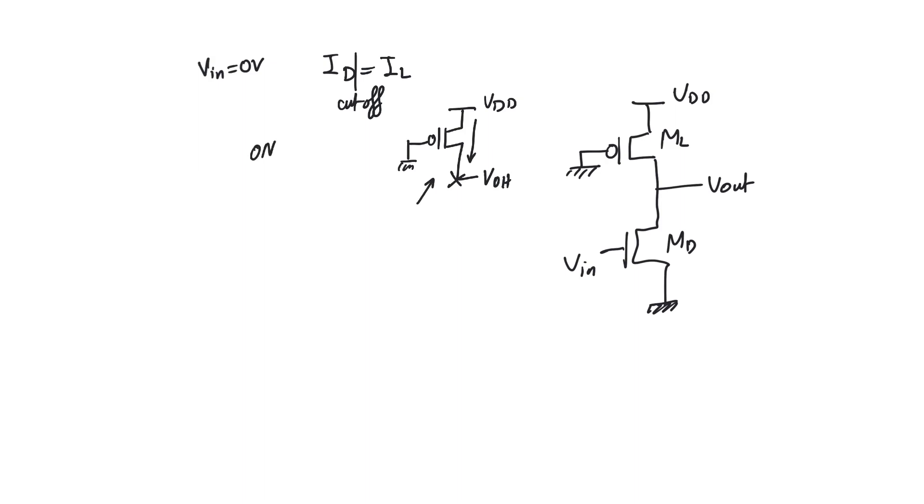And if you don't believe me that it is on, you can create VGS. It's equal to minus VDD, which is definitely less than V threshold P. It's not definitely less than V threshold P because it is negative. Because V threshold P itself is a negative number. It is definitely less than V threshold P because it is largely negative. So this is definitely on.